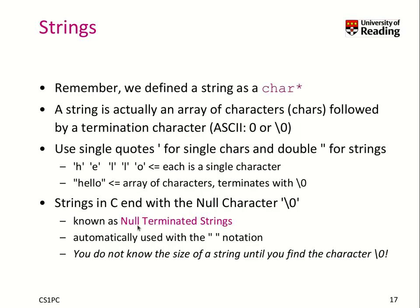Now let's talk about strings. You can think of a string as a compound data type. We define a string basically as a char star. Under the hood, it's actually an array of characters followed by a termination character, which is 0 in the ASCII table, or backslash-0. We also know how to specify a single character using single quotes and double quotes for strings — so "hello" is actually an array of characters terminated with backslash-0.